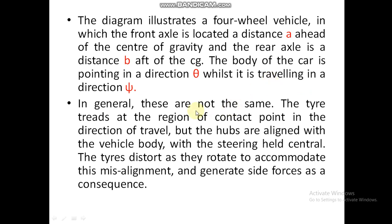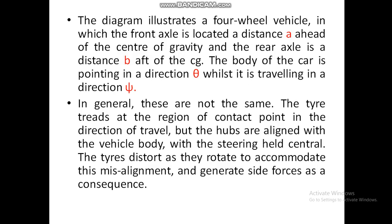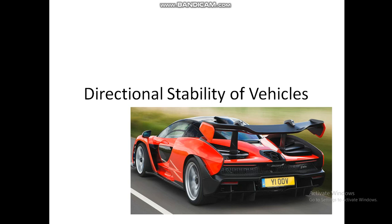In general, theta and psi are not the same. The tire treads at the contact point are in the direction of travel. If the hub is in one direction and the vehicle is moving in another, the contact patch of the tire will be distorted. With the hubs aligned with the vehicle body and the steering held at center, the tires distort as they rotate to accommodate this misalignment, and generate a side force — which is also called the slip angle — as discussed in previous cases. This covers the topic of directional stability.